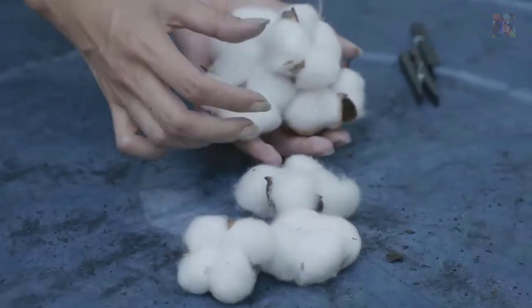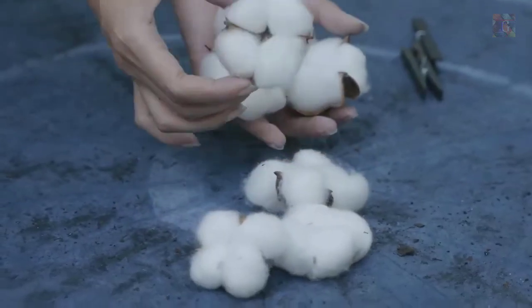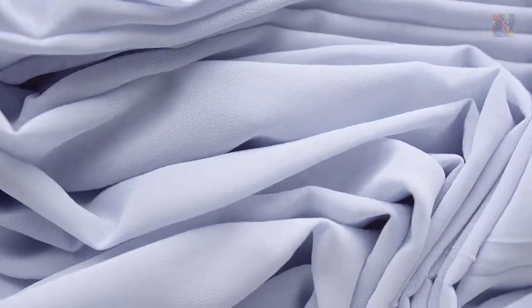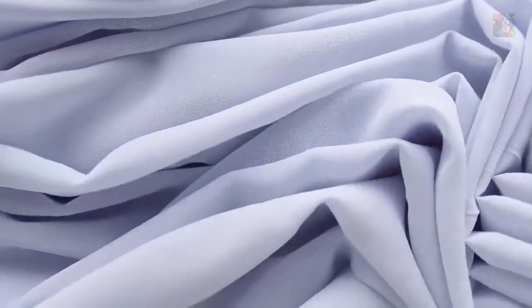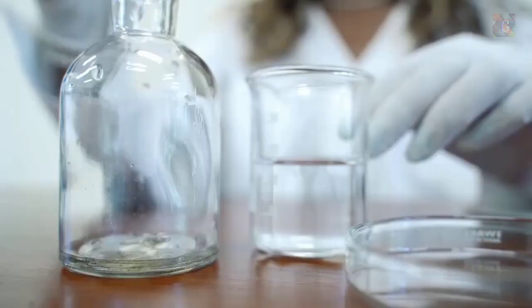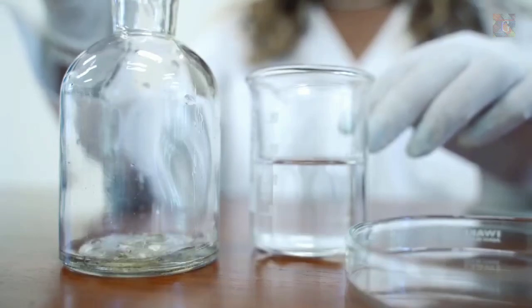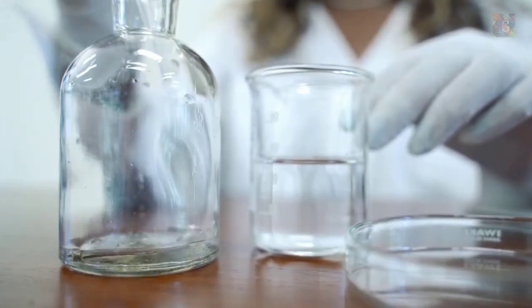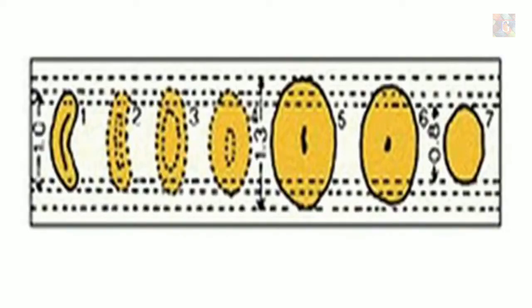In this process, cotton is treated with an alkaline solution to improve cotton fabric luster, dye uptake, and strength. Caustic soda causes considerable swelling of the cotton fiber. The cross section of the cotton fiber is increased by 40 to 50 percent, with an inconsiderable increase in length of about 1 to 2 percent.